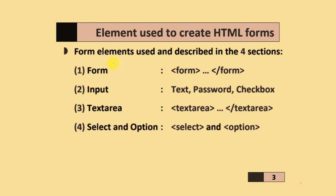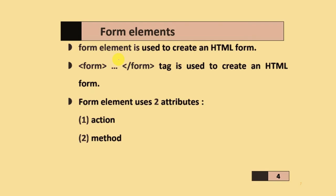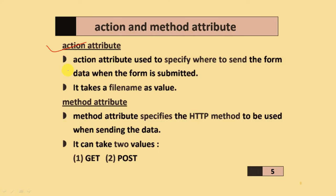The form element is used to create HTML forms. The form elements are described in four sections: form, input, text area, and select and option. The form tag is used to create an HTML form, and it uses two attributes: action and method.